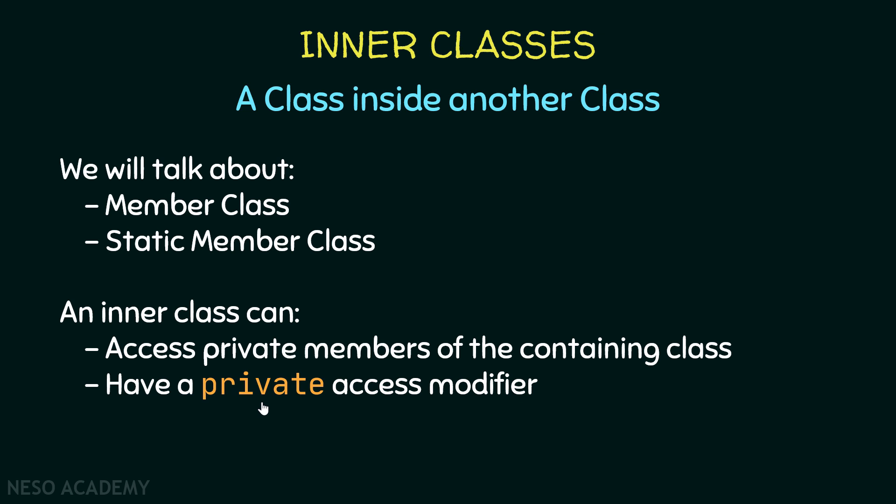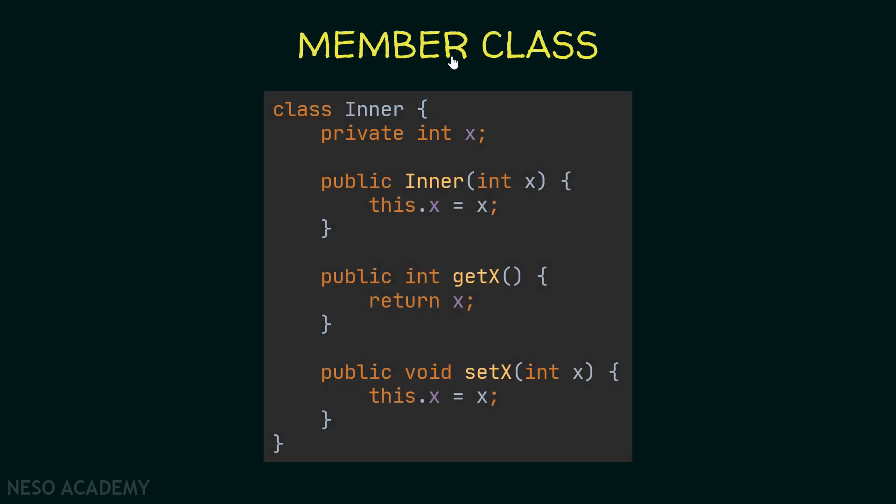A private access modifier can be used on members of classes, and this inner class is going to be a member of the containing class, so we can use the private access modifier. If we want to restrict the access of a class to one class only, we can define it as a private inner class. Now let's start with the examples.